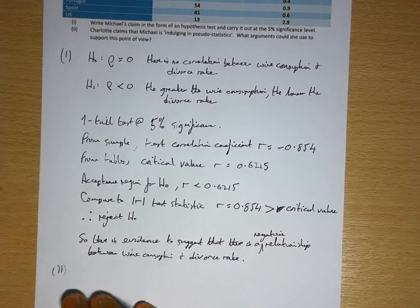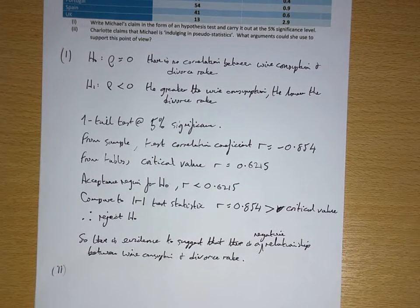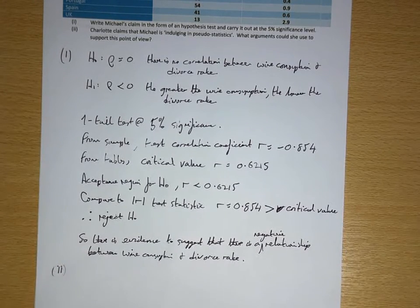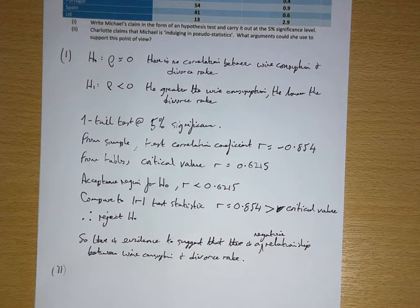Part 2. Charlotte claims that Michael is indulging in pseudo-statistics. What arguments could she use to support this point of view?